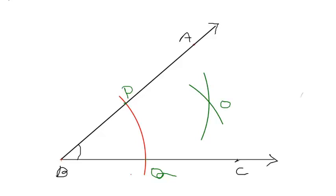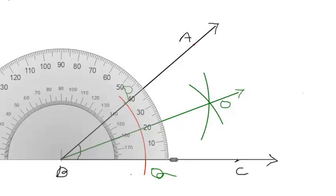Name the point of intersection as point O. Now, draw ray BO. Ray BO is the bisector of angle ABC. Also, measure angle ABO and angle CBO.